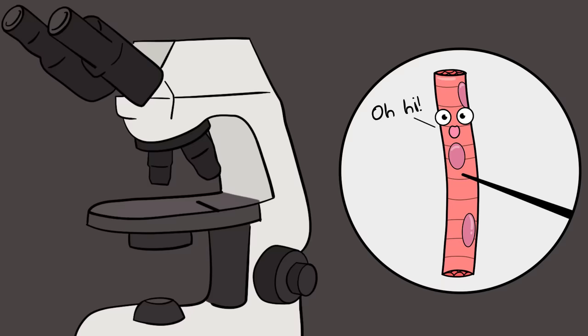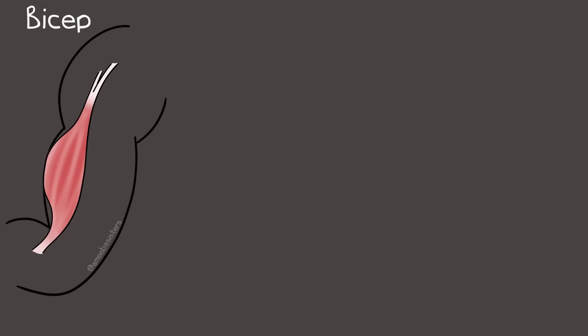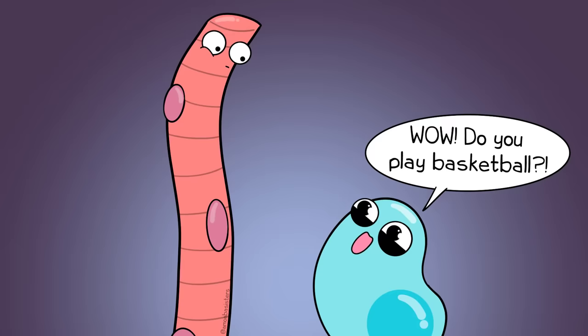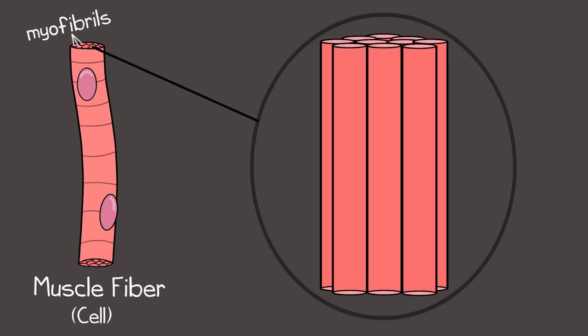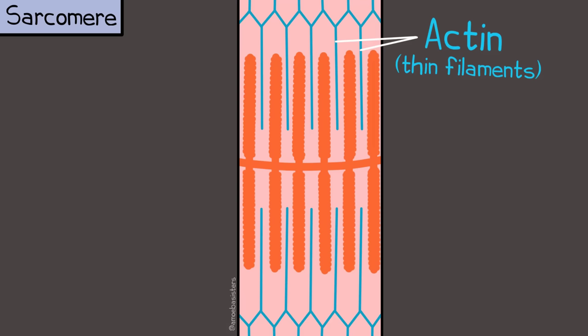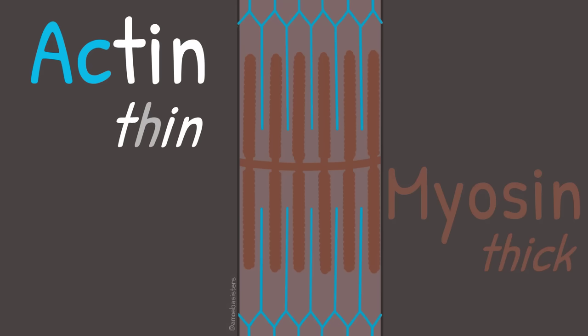If we zoom into some skeletal muscle at the cellular level — how does it contract? Inside a muscle fiber are multiple myofibrils, which are long cylinders. Each myofibril has sections that repeat called sarcomeres, and it's the arrangement of these sarcomeres that contribute to the skeletal muscle's striated look. The sarcomere has a protein known as actin, which makes up what is known as thin filaments. The sarcomere also has a protein called myosin, which makes up thick filaments. A helpful memory trick: the word 'thin' is almost in the word 'actin.'